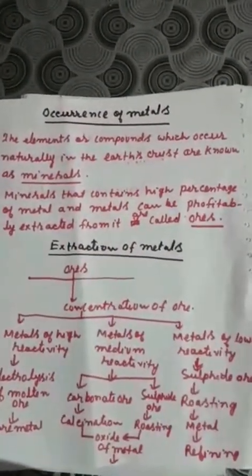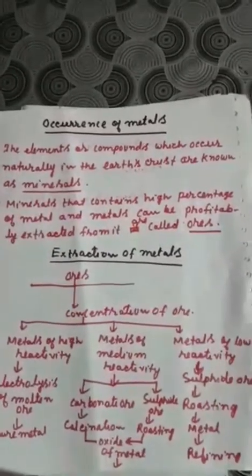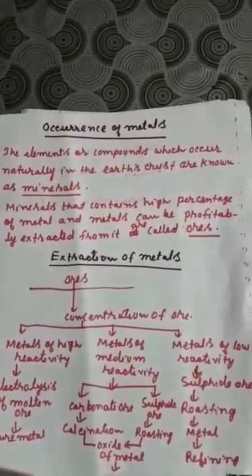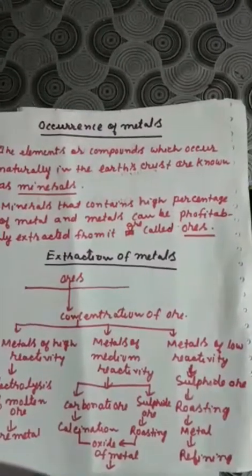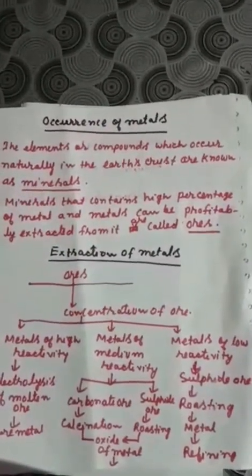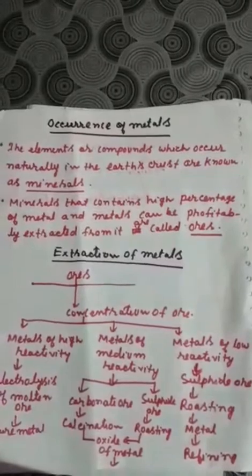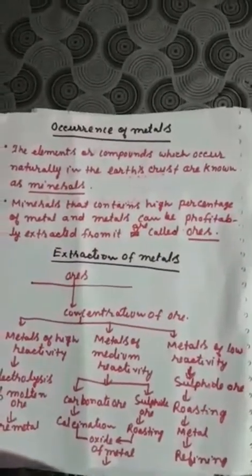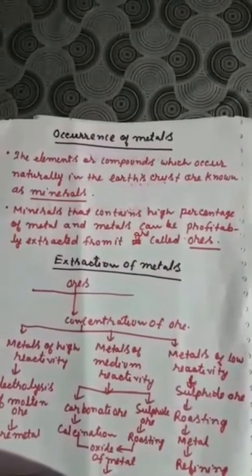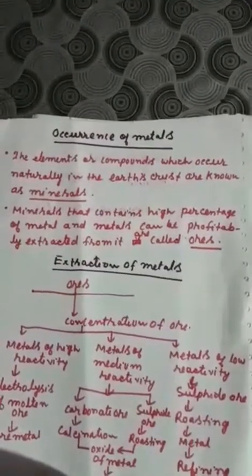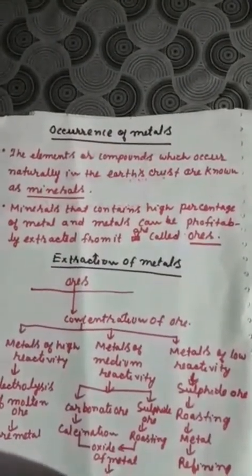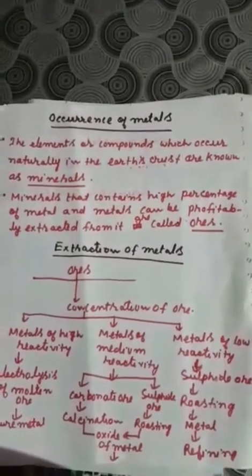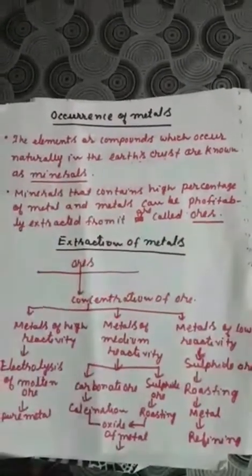Next topic is occurrence and extraction of metals. Elements or compounds which occur naturally in the earth's crust are known as minerals. Some minerals contain a high percentage of a particular metal, and we can profitably extract that metal from those minerals — these types of minerals are called ores. So ores are basically minerals from which metals can be extracted economically.